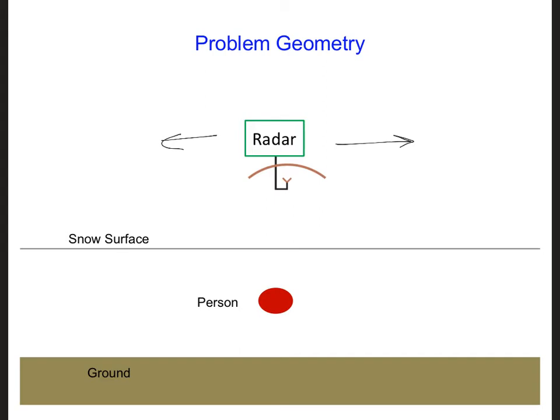Now, for this radar system to work, we would want to send pulses of electromagnetic waves down towards the snow. And we would also want to be able to see individual reflections.